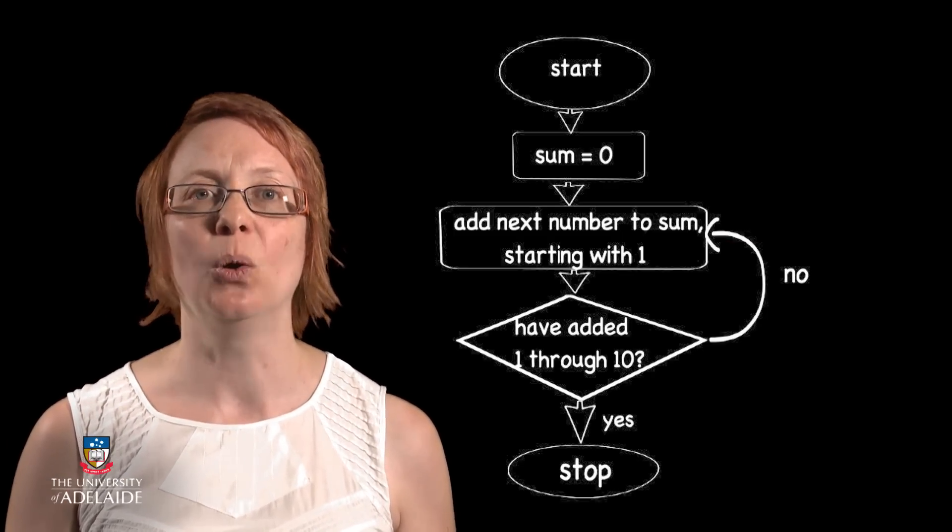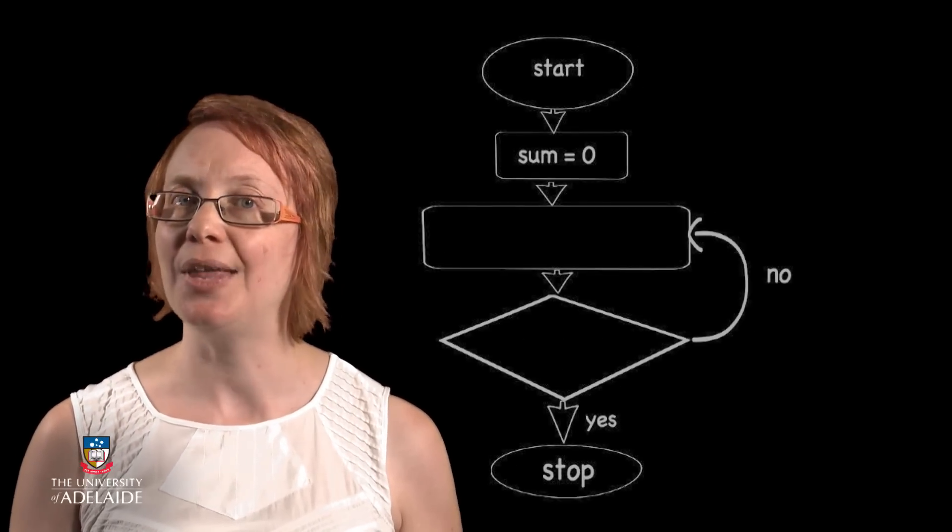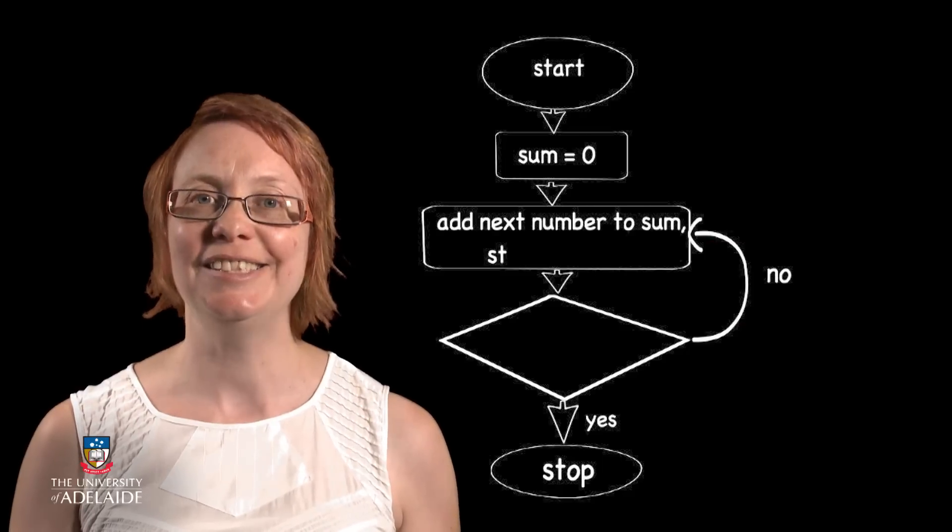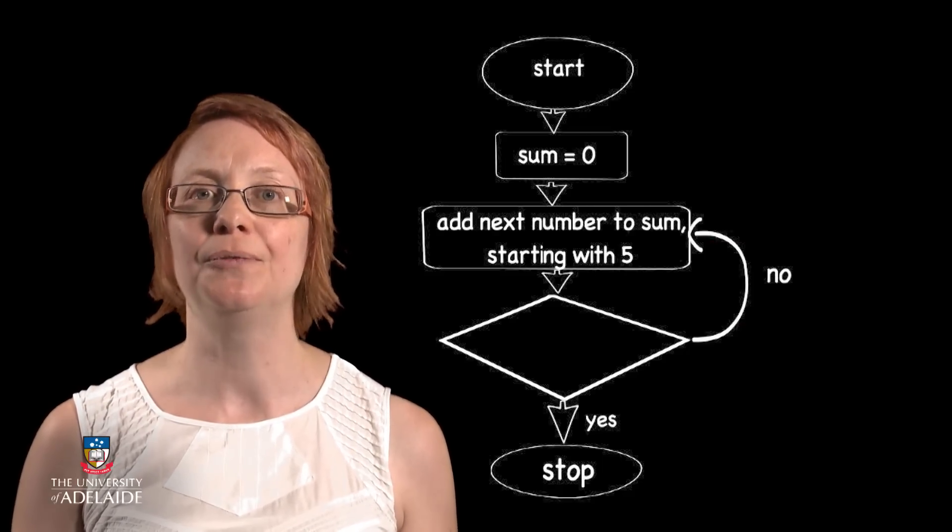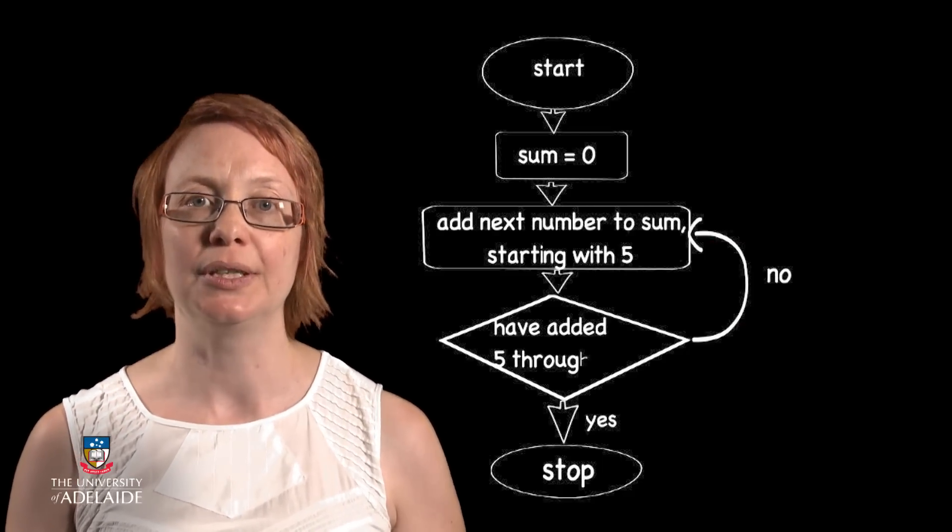What if we wanted to add all of the numbers in the sequence 5 through to 20? What would we have to change then? In this case, we would change the value of the first number that we add, as well as the value used in the condition.